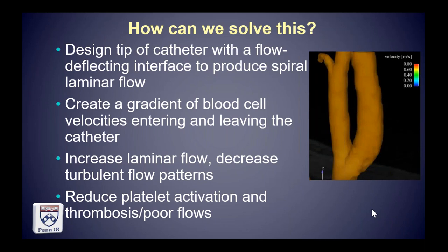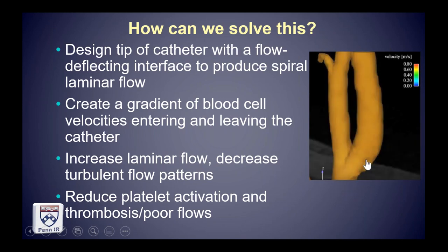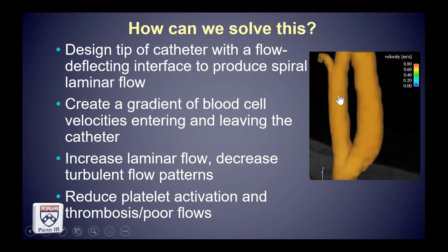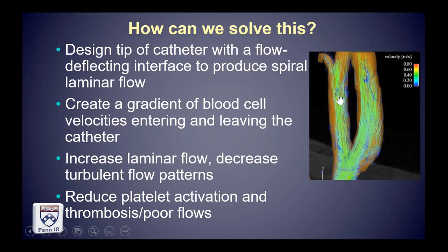You want to maximize laminar flow and decrease turbulent flow patterns, thereby decreasing platelet activation, thrombosis, and poor flows. An encoded MRI scan of the carotid bifurcation demonstrates spiral laminar flow, visible in pathlines from computational fluid dynamics. This carotid bifurcation creates resultant spiral laminar flow in the internal and external carotid arteries as a protective effect against carotid artery stenosis. This phenomenon has been described in the renal arteries and aorta.